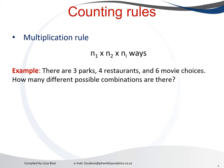To visit all of them, we need to multiply the three parks with the four restaurants with the six movies in order to find the number of combinations. So it will be three times four times six, which will give us 72 ways. So it means we can go to three parks, four restaurants, six movies in 72 ways. There are 72 ways that we can do that.